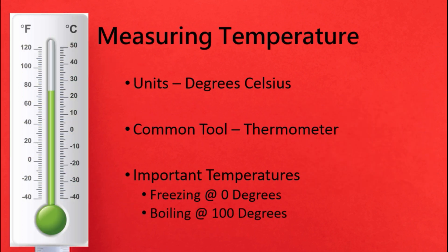When measuring temperature in the metric system, we use Celsius. We're used to using Fahrenheit in the U.S., so it's a little bit of a change in mindset. The common tool we use is the thermometer. The most important temperatures to know are: zero degrees is freezing, and 100 degrees is boiling. There's a thermometer that shows both Fahrenheit and Celsius, which might be a helpful tool when learning metric temperature.